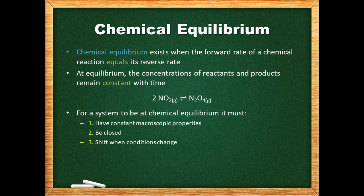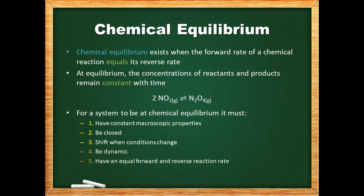Some other criteria for a reaction to be at chemical equilibrium include: the system is dynamic, it must have an equal forward and reverse rate, and the system is able to approach equilibrium from either direction.